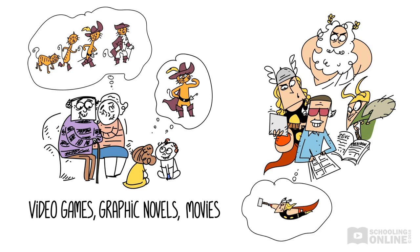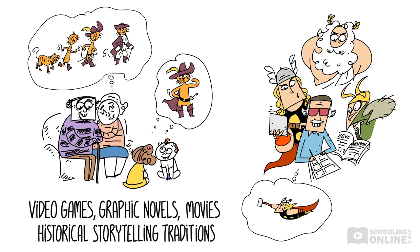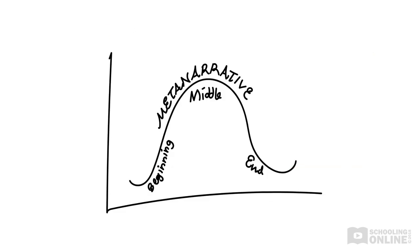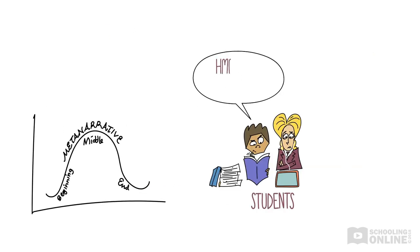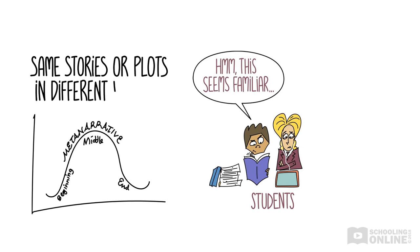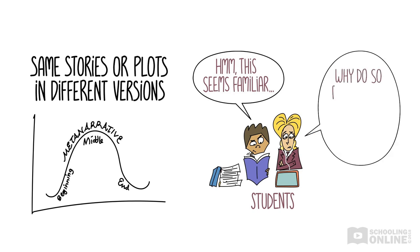Think about Thor, a superhero from the Avengers franchise, who is based on a mythical Viking god. As you go through your texts, identify how they draw on historical storytelling traditions. One way to do this is to figure out whether your text engages with any big metanarratives. Metanarratives are the same stories or plots that appear in different texts across a range of religions, cultures and time periods.